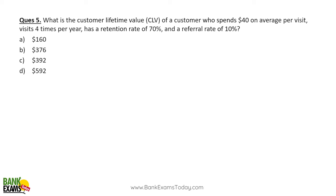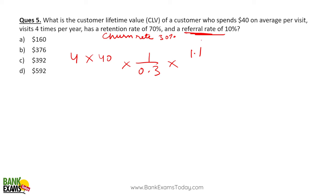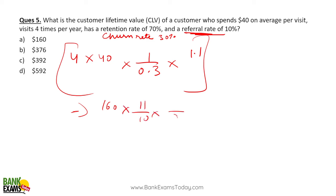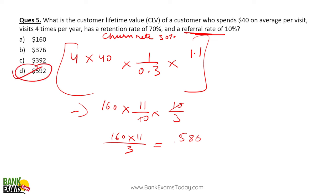What is the customer lifetime value of a customer who spends $40 on average per visit and visits 4 times? So revenue = $40 × 4 = $160. Retention rate is 75% (wait — if retention rate is 75%, churn rate is 30% — 1 ÷ 0.3). Referral rate is also given as 1.1. CLV = $160 × (1 ÷ 0.3) × 1.1 = 160 × (11/3) ≈ $586. Options normally doori hoti hai, so you can take the closest answer around 585–586.